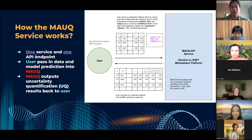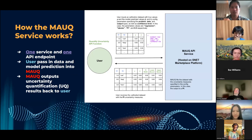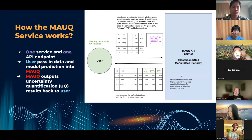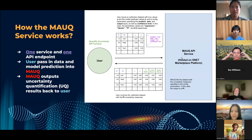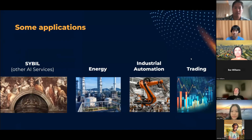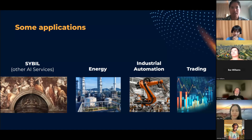The service works through one API endpoint. The user passes in data — whether as a table or a time series — into the service, and MOCK outputs the uncertainty quantifications back to the user. For example, if the user wants a prediction interval, it will provide that.